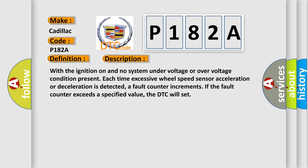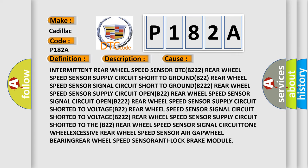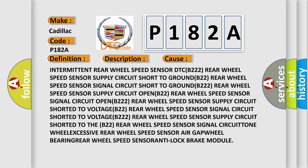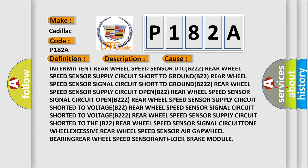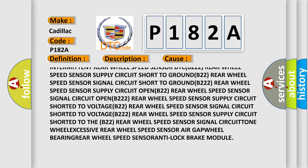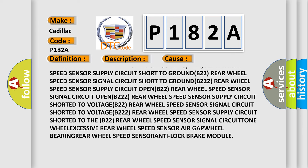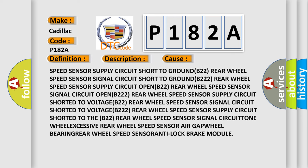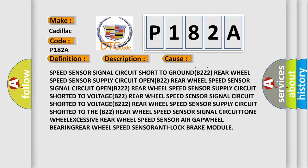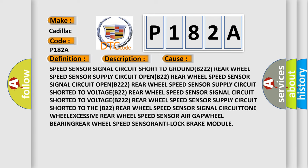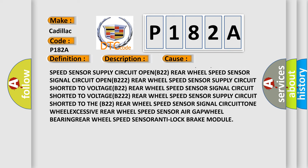This diagnostic error occurs most often in these cases: intermittent rear wheel speed sensor DTC B222, rear wheel speed sensor supply circuit short to ground B222, rear wheel speed sensor signal circuit short to ground B222, rear wheel speed sensor supply circuit open B222.